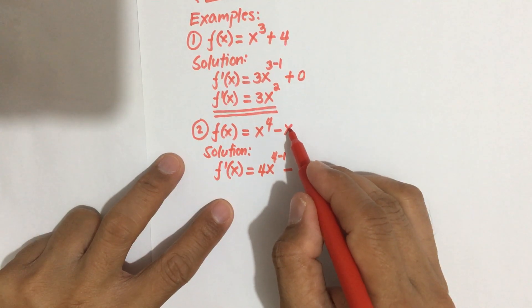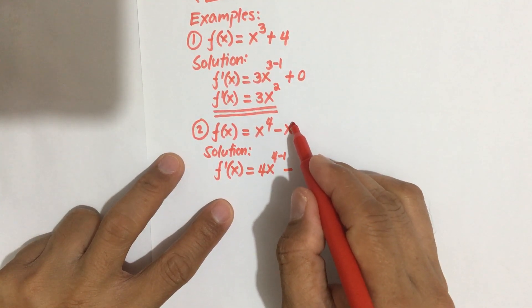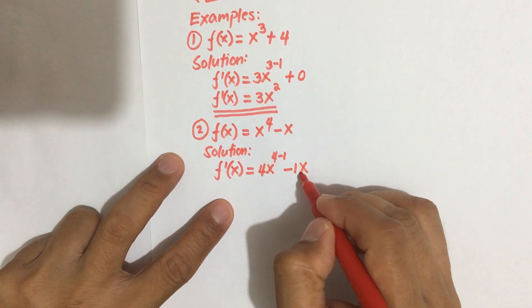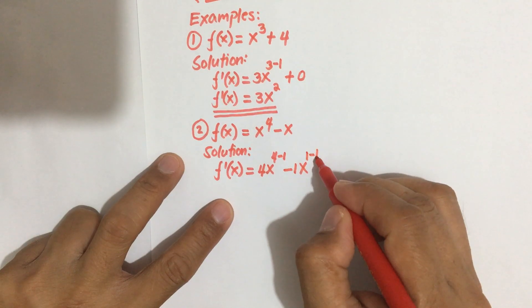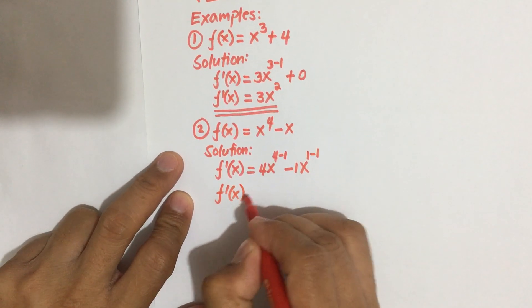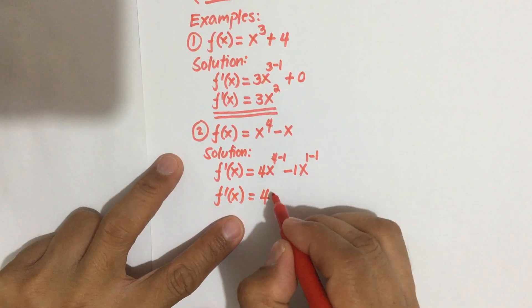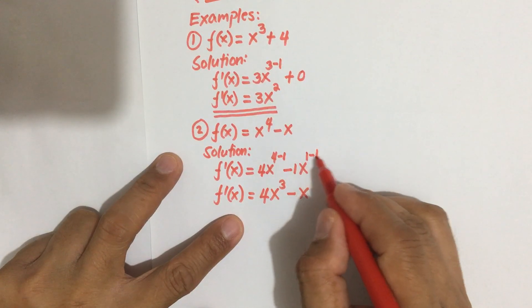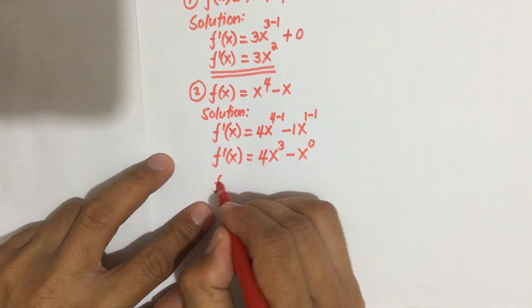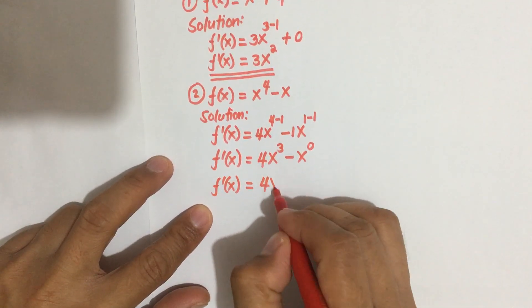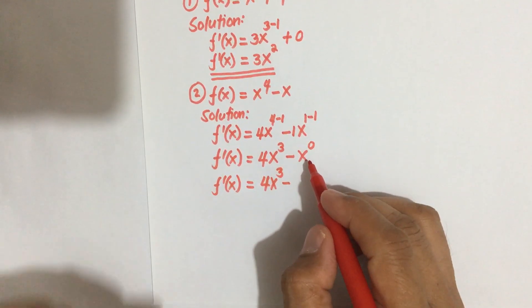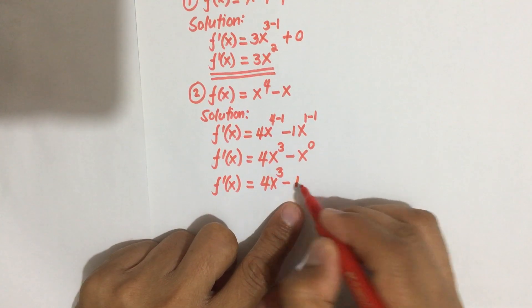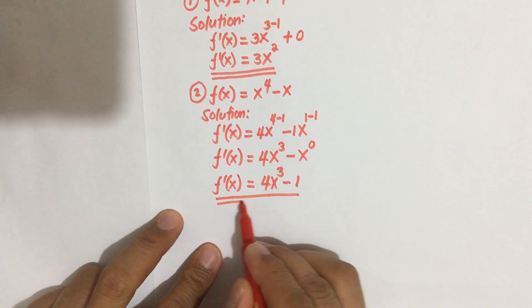The term x is understood to have a power of 1, so bring it down and multiply by x, then the power 1 minus 1 equals 0. So f'(x) equals 4 times x to the power 3, and 1 times x to the power 0. Since any number raised to the power 0 equals 1 (provided the base is not 0), f'(x) equals 4x cubed minus 1.